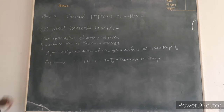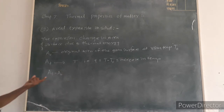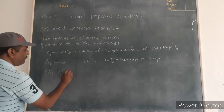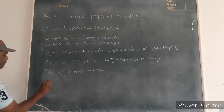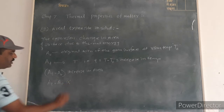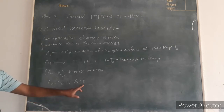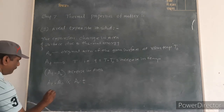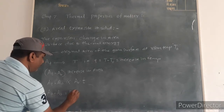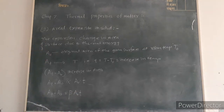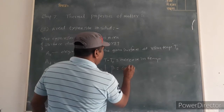Now experimentally it is found that the increase in area, that is AT minus A0, is directly proportional to the original area A0 and the rise in temperature. Therefore AT minus A0, that is the increase in area, is equal to a constant beta times A0 times T, where beta is the proportionality constant.